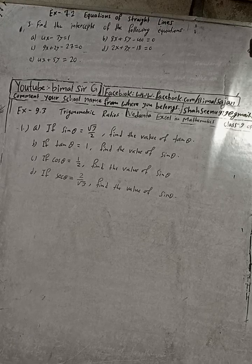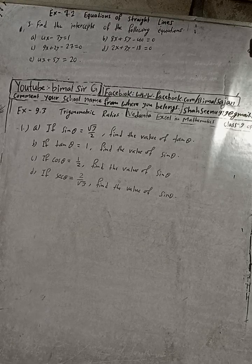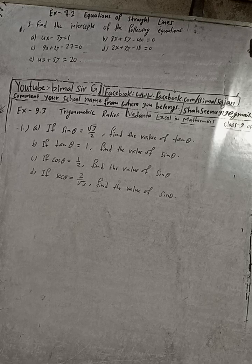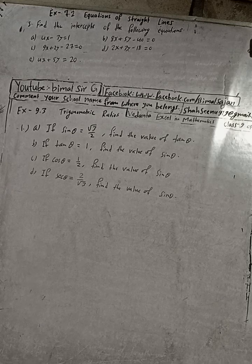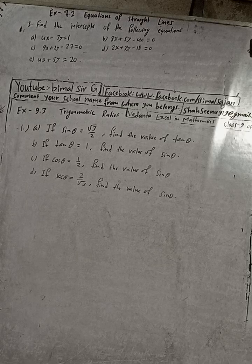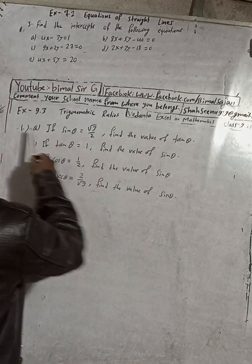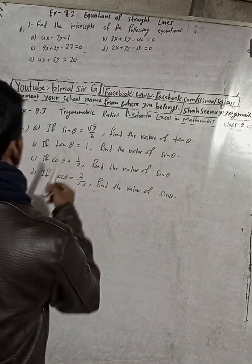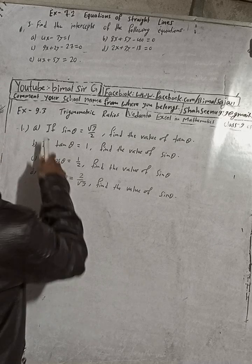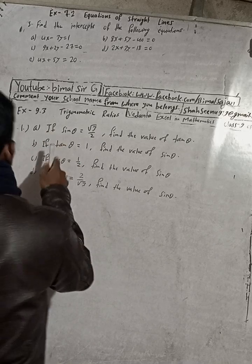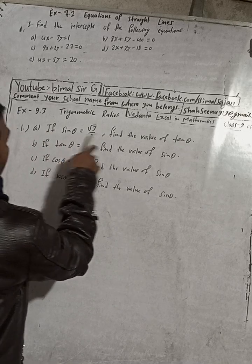Hi class 9 and 10 students, welcome back to Bimal Sarji YouTube channel. This is question number one, exercise 9.3 — trigonometric ratios from Vedanta Excel in Mathematics class 9, that is optional mathematics. The question is: if sin θ is equal to √3 by 2, find the value of tan θ.